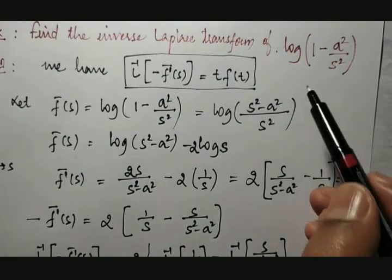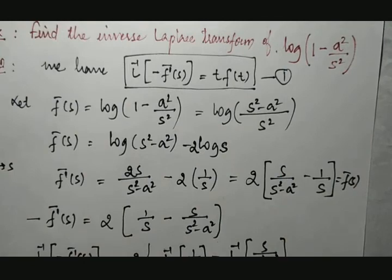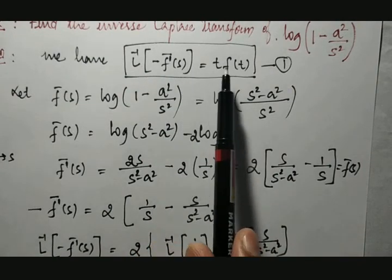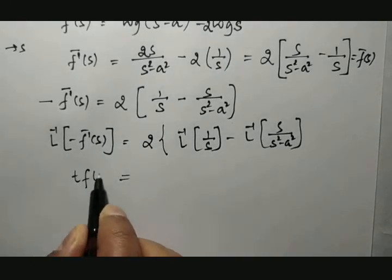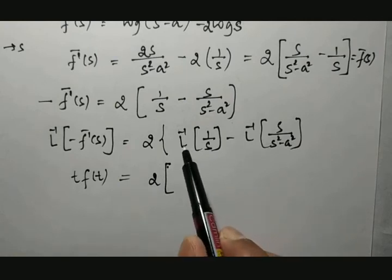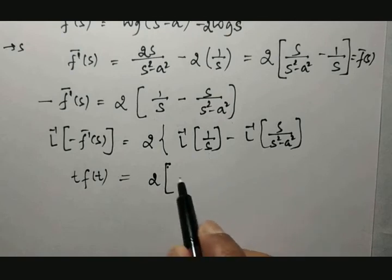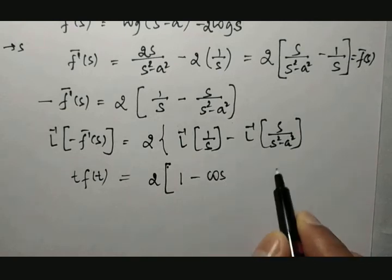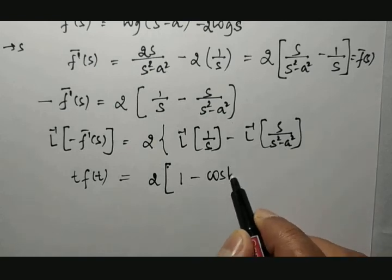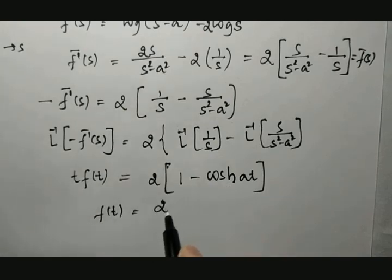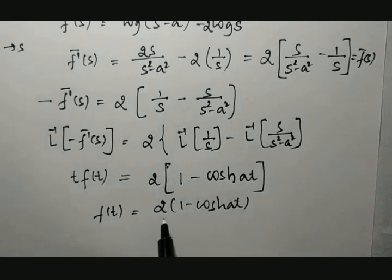As per the given property, which we took as equation number 1, the inverse Laplace of minus f-bar-dash of s equals t into f of t. The inverse Laplace of 1 over s is 1, and the inverse Laplace of s over s-squared minus a-squared corresponds to cosh — since s-squared minus a-squared with s in the numerator gives the hyperbolic cosine. Therefore, t into f of t equals 2 times 1 minus cosh(at), and so f of t equals 2 times 1 minus cosh(at), divided by t.